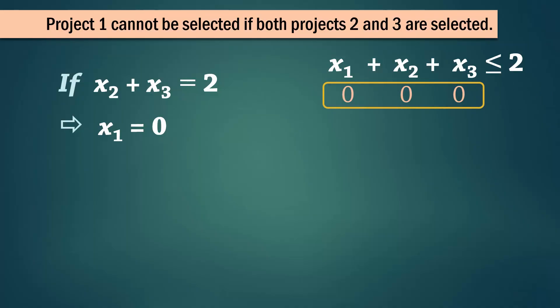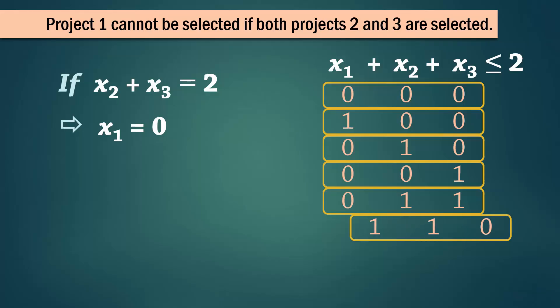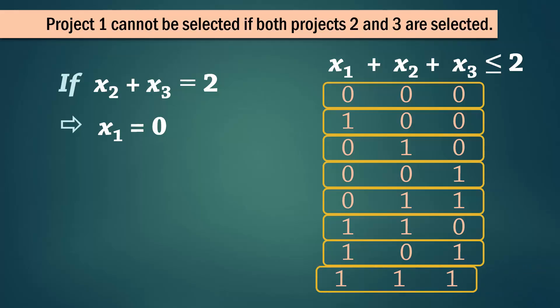We could select none, or select only one of the 3 projects individually. We could select projects 2 and 3 only, or project 1 with only 2, or project 1 with only 3. But we can't select project 1 if both 2 and 3 are also selected.